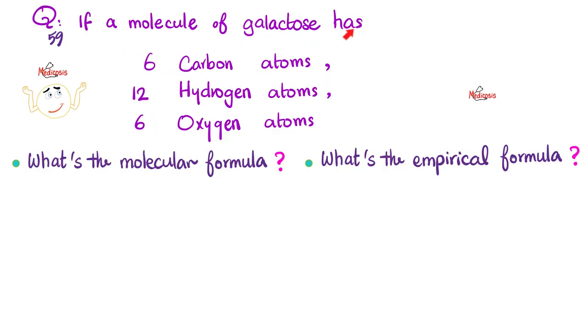Next question. If a molecule of galactose has six carbon atoms, 12 hydrogen atoms, and six oxygen atoms, what's the molecular formula and what's the empirical formula? Molecular formula: just give me the exact numbers of atoms. I have C6, H12, and O6 as they told me. Six carbons, 12 hydrogens, and six oxygens. Empirical is about simplifying it mathematically speaking. Divide each one by six, so you get C1, I will not write the one, H2O. That's the empirical formula. Molecular formula, empirical formula.